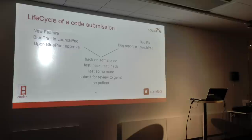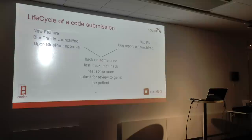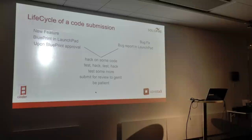So this is kind of the lifecycle of a code submission — how you start and how it ends up. On the left side we have the case of a new feature you want to propose for Cinder; on the right side, a bug fix. For a new feature, the first thing we do is use what's called Launchpad for all of our project management. The first step is to create a blueprint, which basically just outlines what it is that you want to do. You file a blueprint and say you want to implement feature XYZ, then give some detail as to why it's useful, how you want to implement it, and what the use cases are.